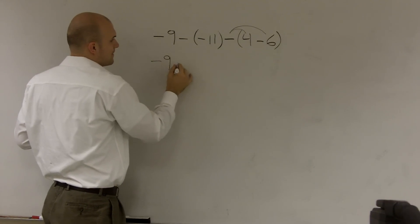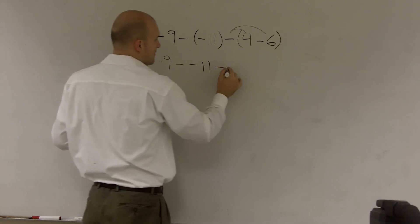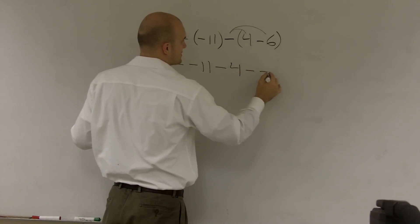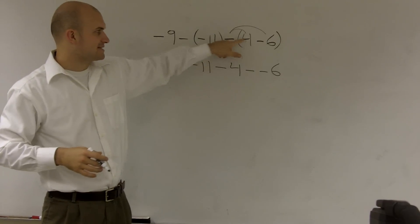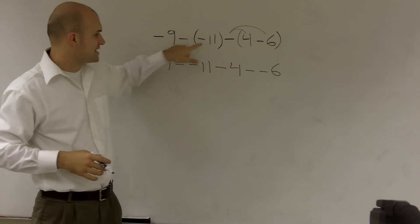So I have negative 9 minus negative 11 minus 4 minus negative 6. What I did was put that negative sign in front of both those values, and I put a negative sign in front of that value.